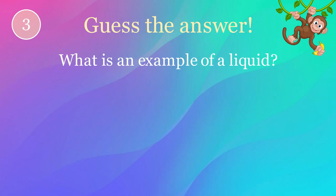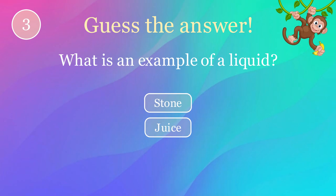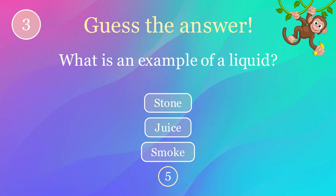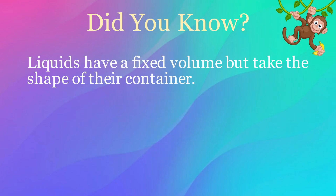What is an example of a liquid? Options: stone, juice, smoke. The correct answer is juice. Here's an interesting fact: liquids have a fixed volume but take the shape of their container.